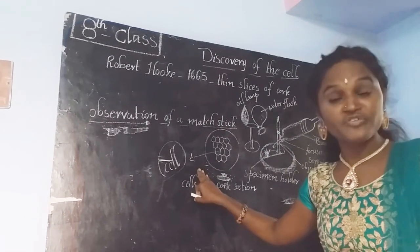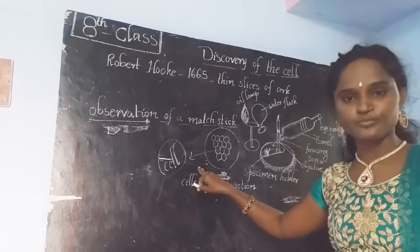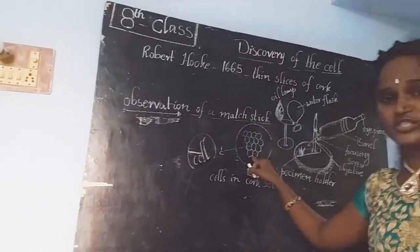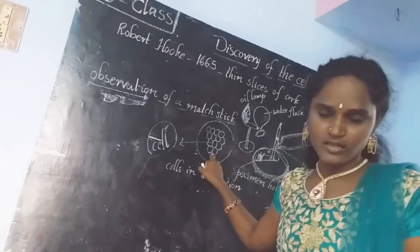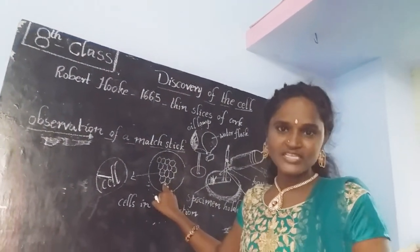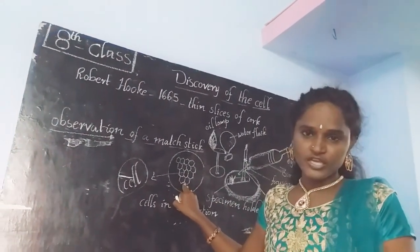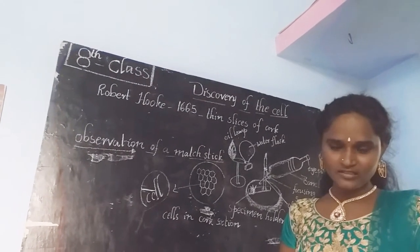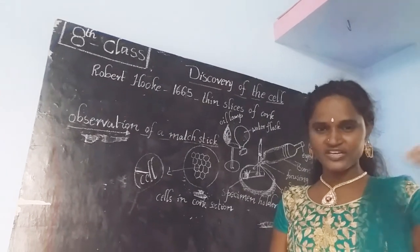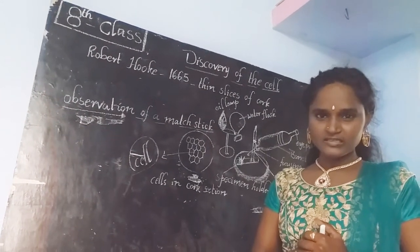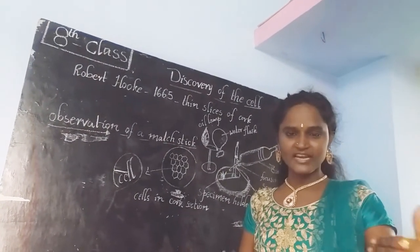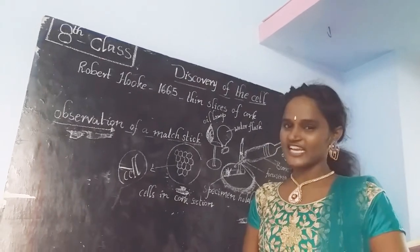Just as Robert Hooke did, we are also capable of observing those hexagonal structures. Actually, he observed a dead cell, not a living cell, because he observed the bark of the oak tree, which is a dead cell. If we started examining both a dead cell and a living cell, are there any similarities? After observing both, we may get clarity.